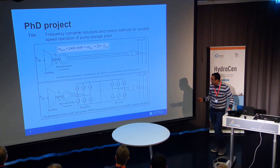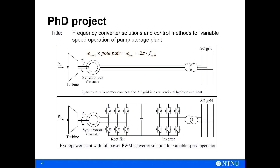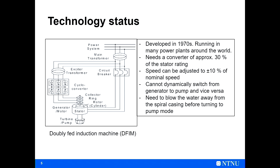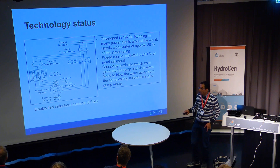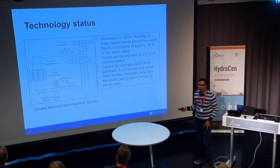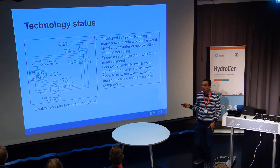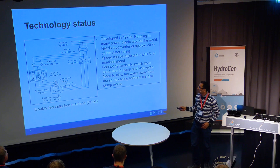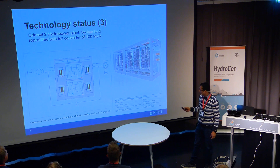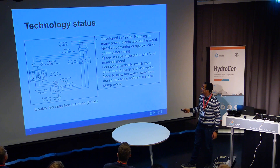It's not that we are trying to do this for the first time — there are already some existing technologies executing variable speed operation today. As per today, we have another kind of motor-generator system that enables variable speed technology, called the induction machine. Arne talked about synchronous machine, but this is an asynchronous machine. The asynchronous machine does not run at synchronously rotating — constant — speed, so it is called an induction machine.